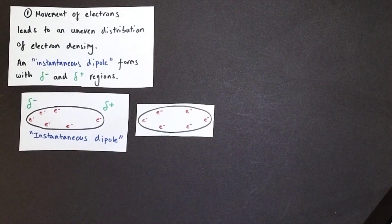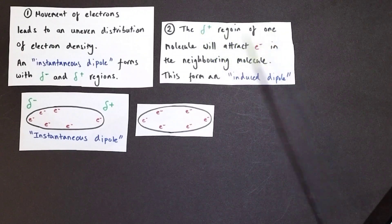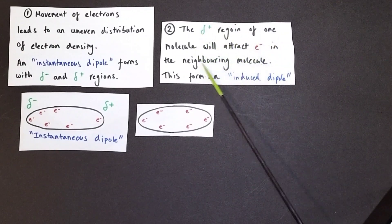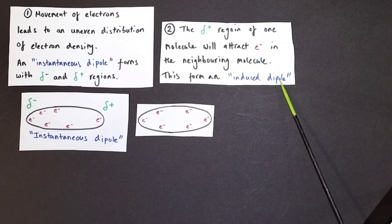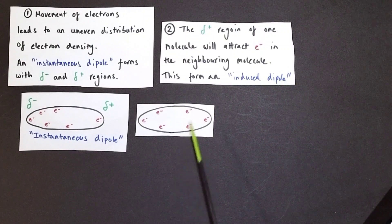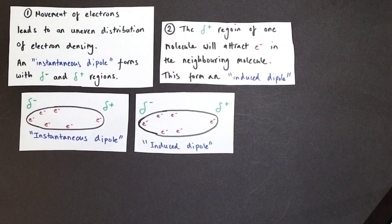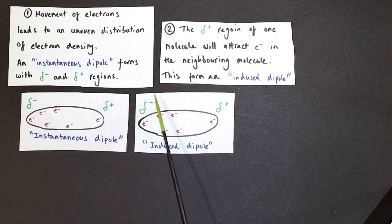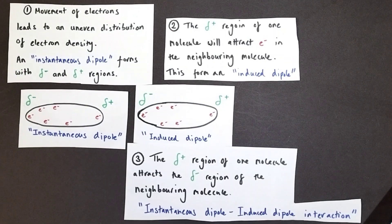Now, if we bring a second molecule adjacent to our first molecule, the delta positive region of our first molecule will attract electrons in that neighbouring molecule towards it. This will form what is known as an induced dipole. And look at what happens to our molecule here — the induced dipole now has electrons to one side and a delta negative region next door to the delta positive region of the original molecule.